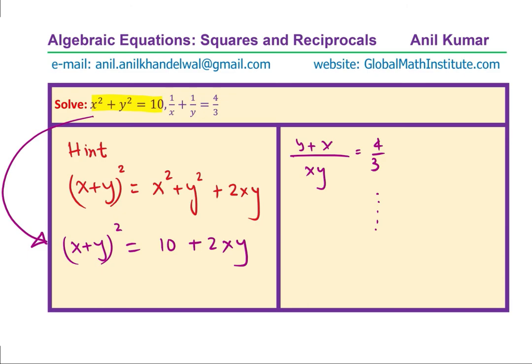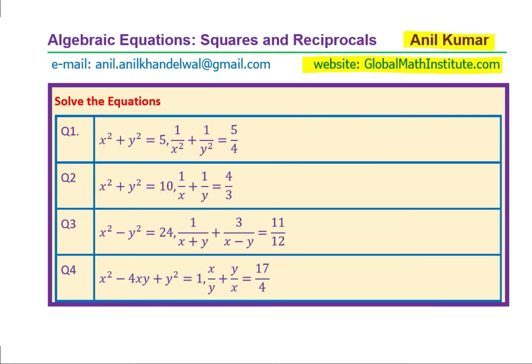The solution appears to be x = 3, y = 1, or vice versa. You can see that 3 is a prime number, and the only way to get a product of 3 from integers is 3 × 1, and 3 + 1 = 4. If this is a multiple choice question, you can write down the answer and move forward. I'll leave the full working to you — this hint should help.